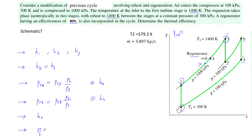The thermal efficiency is found where net work equals (H3 − H_A) for the first turbine stage, plus (H_B − H4) for the second turbine stage, minus (H2 − H1) for the compressor work — all divided by the total heat added: (H3 − H_X) + (H_B − H_A), since heat is added twice — once in the combustion chamber and once in the reheat combustion chamber. That's how you find thermal efficiency for a cycle with reheat and regeneration.